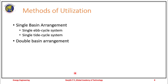Methods of utilization include a single basin arrangement and a double basin arrangement. Within the single basin arrangement, there is the single ebb cycle or single tide cycle — as the name suggests, there is a single basin through which power is extracted. In a double basin arrangement, two basins are used.